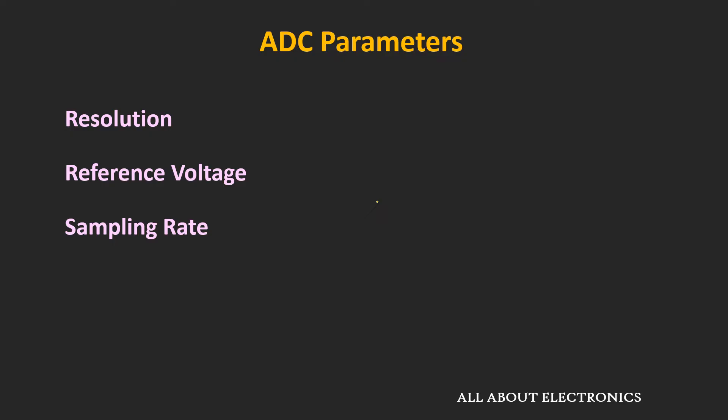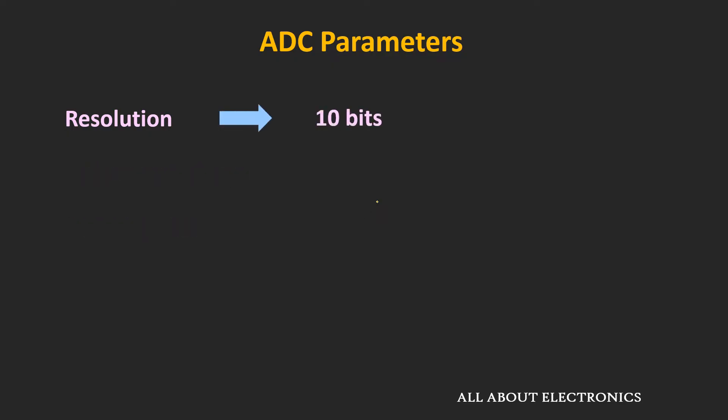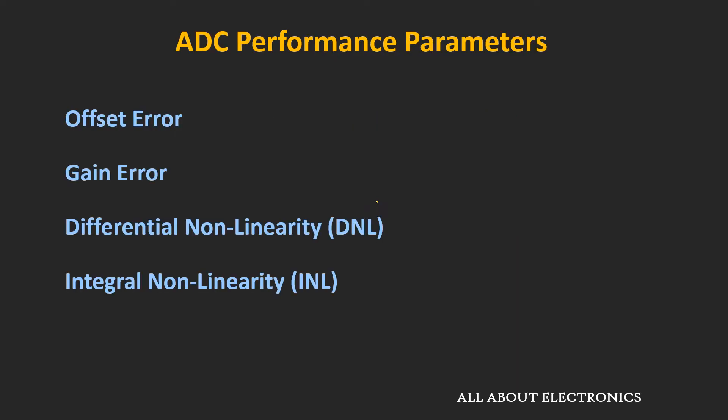For example, for a given application, let's say you require 10-bit accuracy, and you might feel that a 12-bit ADC would do the job. But you can't overlook certain parameters before the selection of the ADC. For example, for a 12-bit ADC, if the integral non-linearity error or the INL is 4LSB, then effectively it will provide only 10 bits of accuracy.